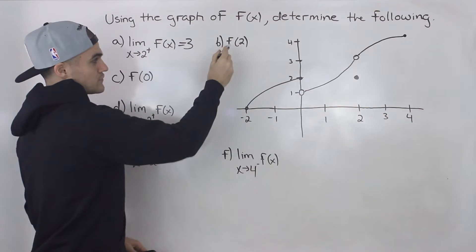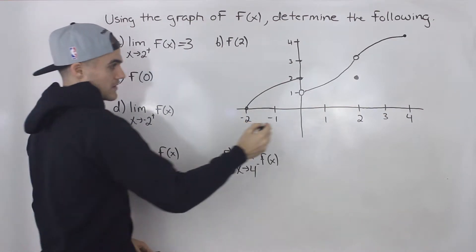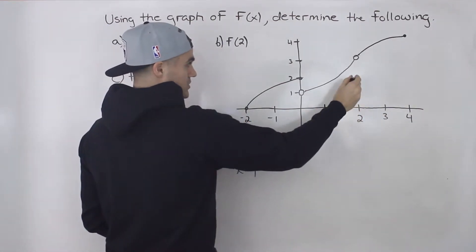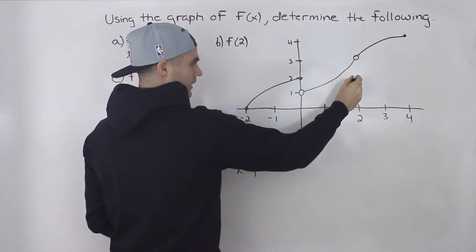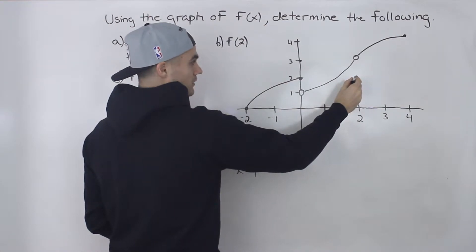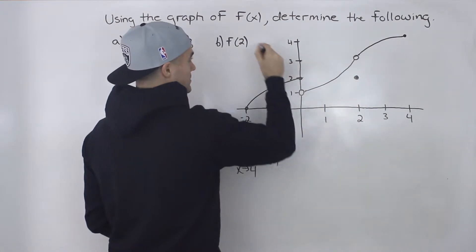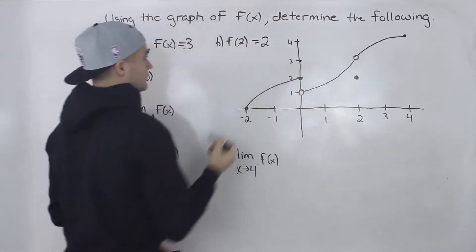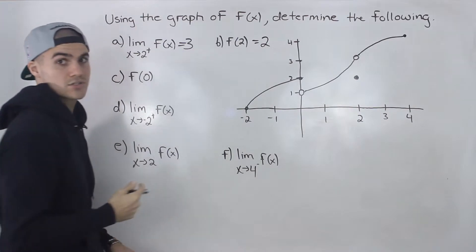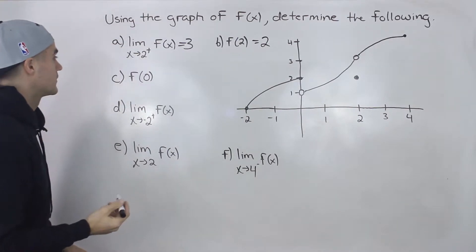f of two, as we just mentioned, is the point at which the function is defined. It's defined at this solid dot here and that happens at a y value of two. So that's the answer to part b.